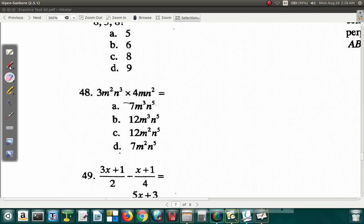It says 3m squared n cubed times 4mn squared is equal to. Alright. It says 3m squared n cubed by 4mn squared. Remember, you really have multiplication between these two. But you don't generally put multiplication between letters or between numbers and letters. Alright. What it means is multiply. But anyway, let's put like terms together.